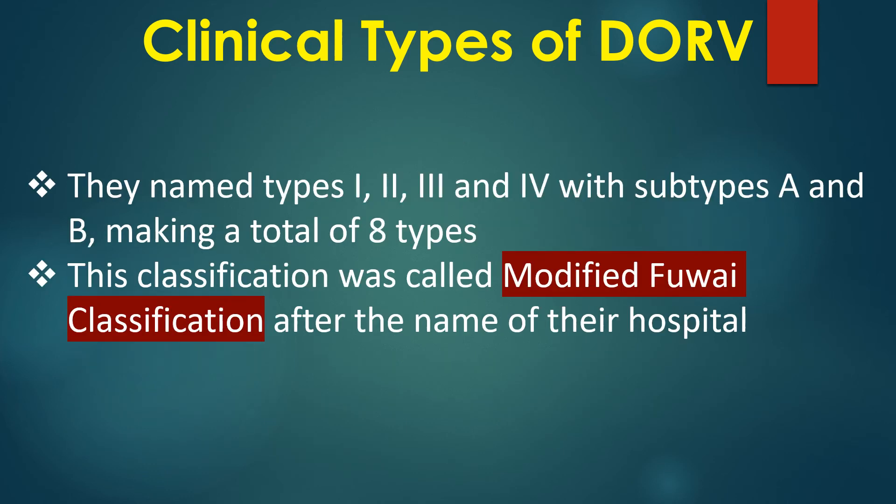They named types 1, 2, 3, and 4 with subtypes A and B, making a total of 8 types. This classification was called the modified FCI classification, named after their hospital.